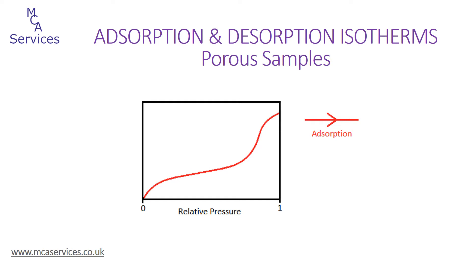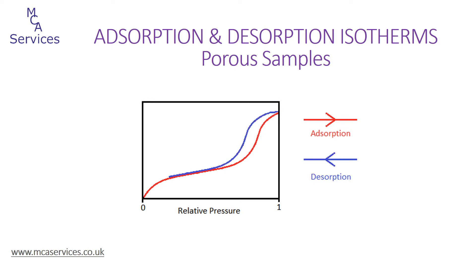If we consider the isotherm of a porous material, for example nitrogen adsorption to a mesoporous sample — which we showed previously to give a type 4 isotherm — we will consider the simplest pore geometry as well, and that is open-ended pores of cylindrical geometry. In this case the desorption branch does not follow the adsorption, and we observe hysteresis between the two isotherm branches.